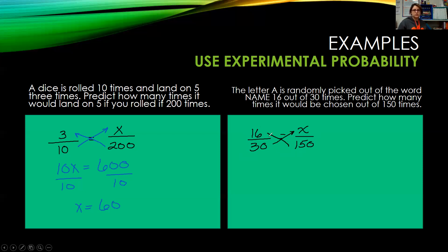So we're going to predict if we did this 150 times, how many times would we get the letter A? We're going to cross multiply. We'd get 30x equals 16 times 150. That's a bit bigger than what I can do in my head. So 150 times 16, we get 2400. We're going to divide that by 30. We get that x equals, I know I can cancel a zero. Three goes into 24 eight times with a zero left over. So we would expect out of 150 pulls of a letter from the word name, 80 of them would be the letter A based on our smaller experiment.